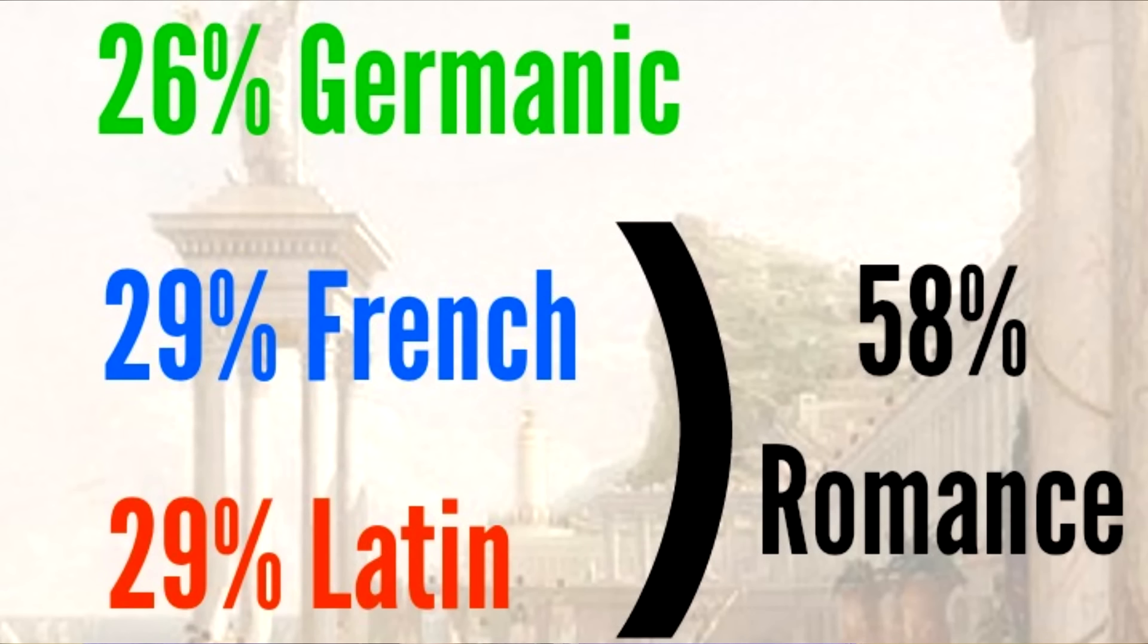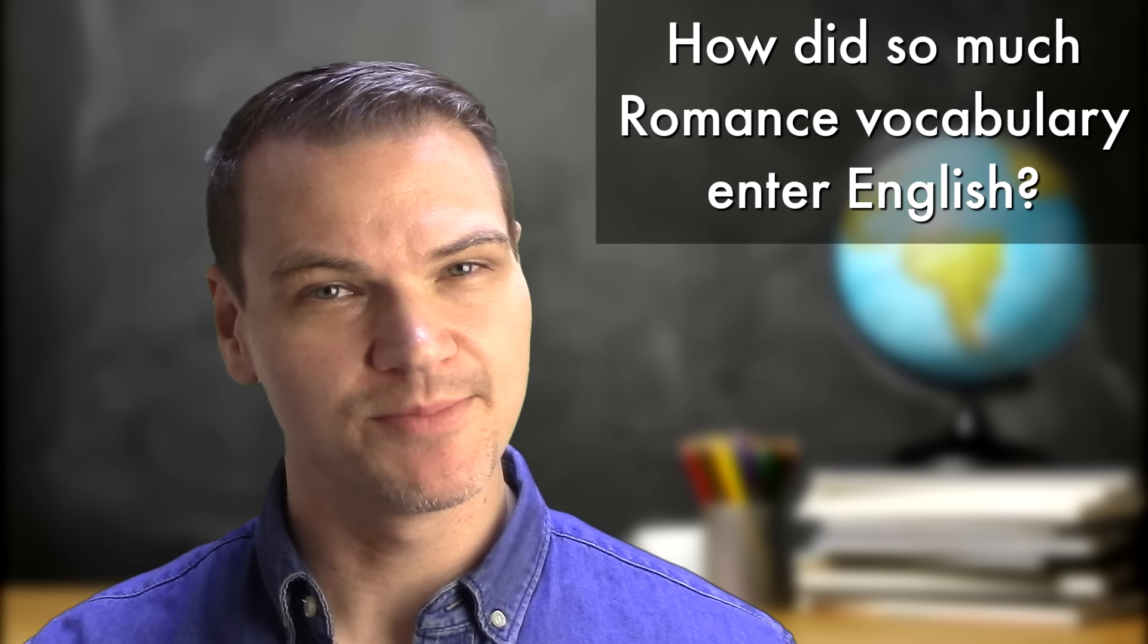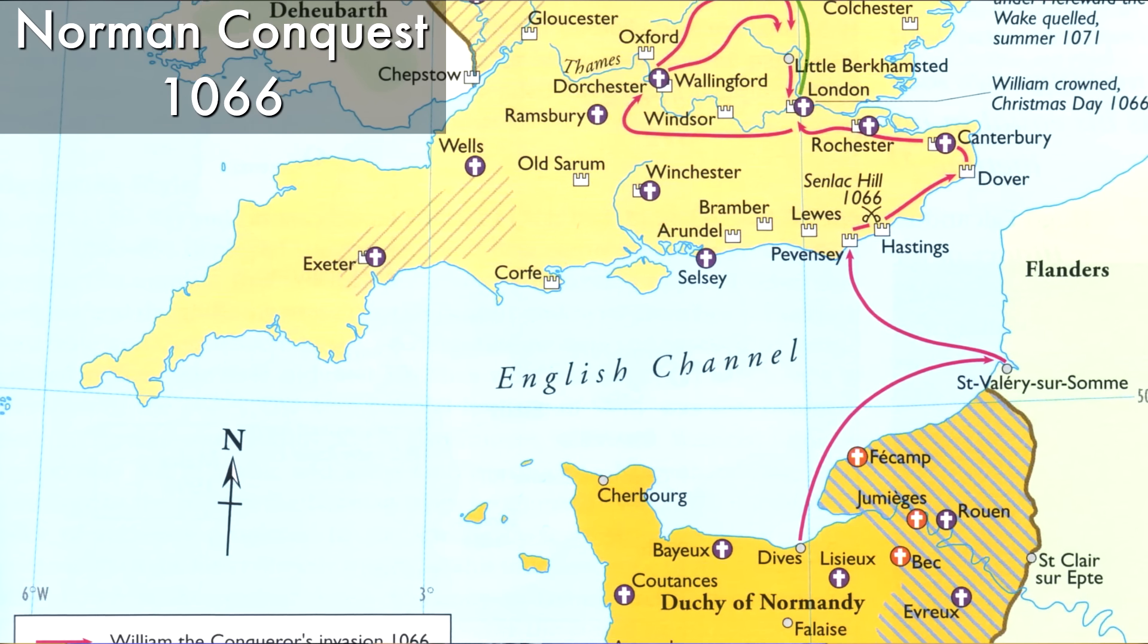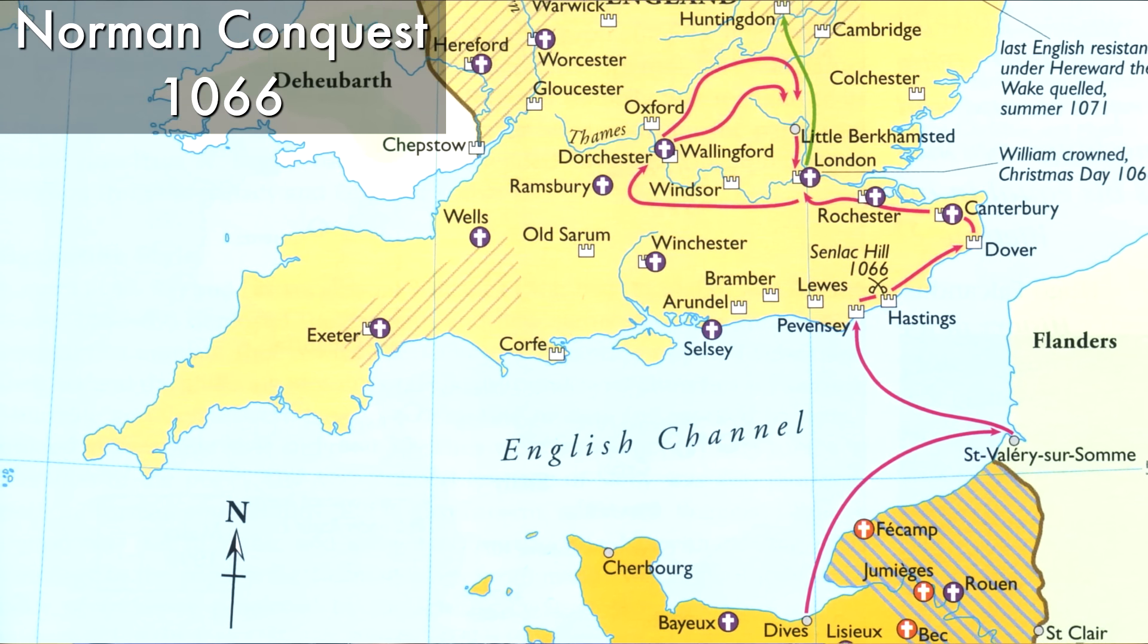So if we ignore the origins of English and its grammar and syntax, and just focus on the vocabulary for a minute, then English is largely a Romance language. How did so much Romance vocabulary enter English? Much of the French vocabulary entered English after the Norman conquest of 1066.